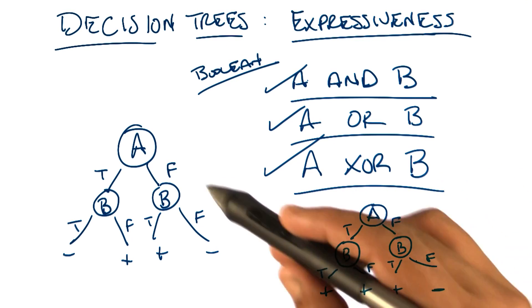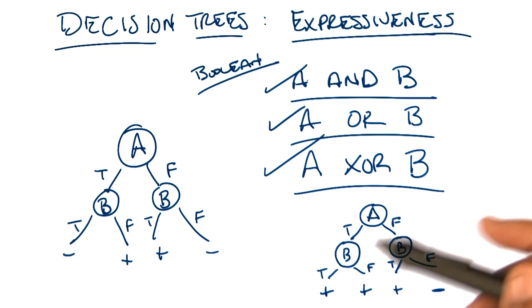But, as we pointed out when we did it last time, it's more of a decision tree than we actually need. I can see that. Because in particular, we don't actually need this.